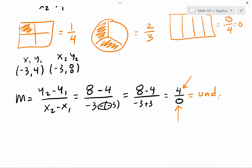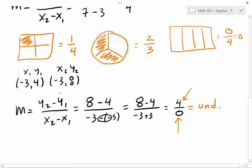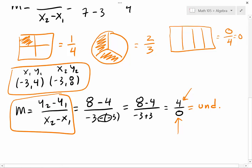So when doing slope, you're going to need the formula and you're going to need two points.